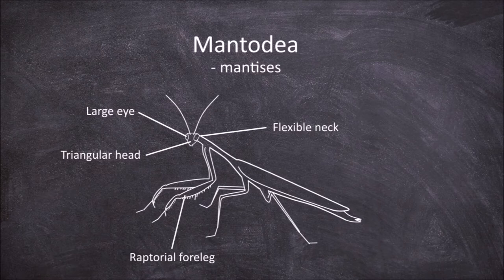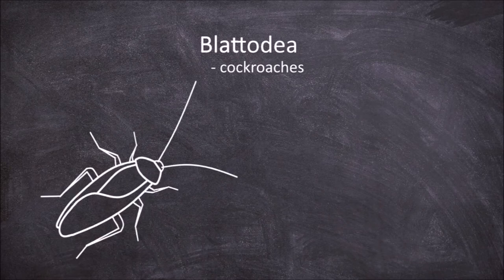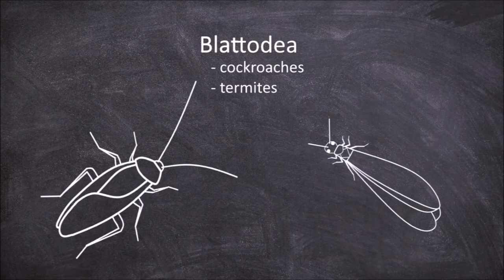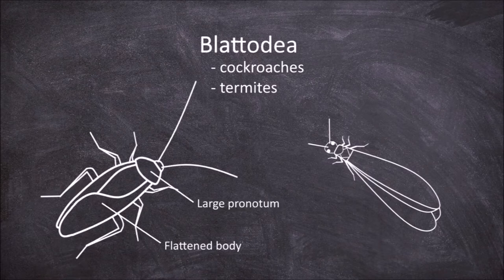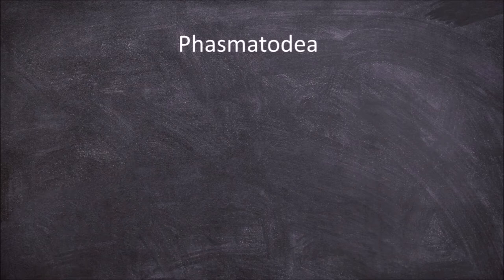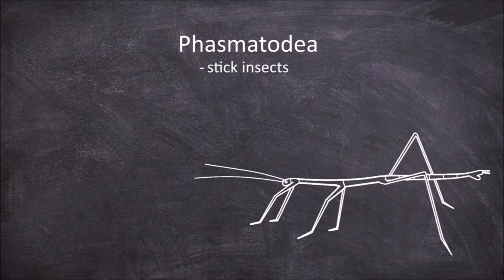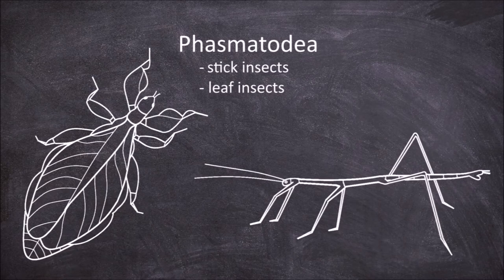The next order is the Blattodea, which are the cockroaches and the termites. Cockroaches are characterized by having flattened bodies and a large pronotum that covers most of the head. Termites are characterized by their presence of a social system. The next order is the Phasmatodea, which are the stick insects and the leaf insects. Members of this order are adapted to be cryptic on the plant species they live around — stick insects resemble twigs and branches whereas leaf insects resemble leaves.